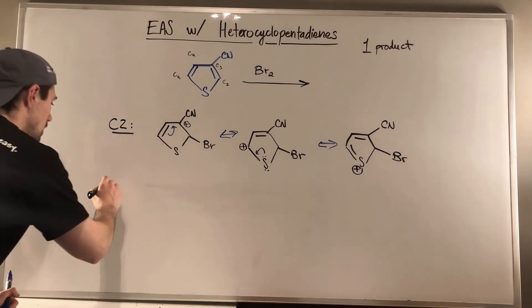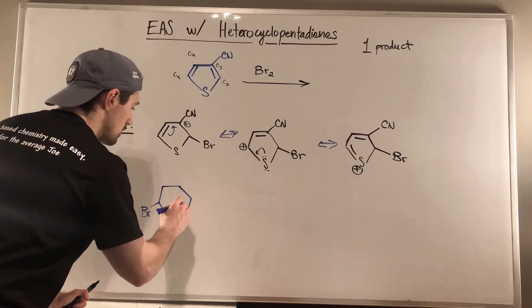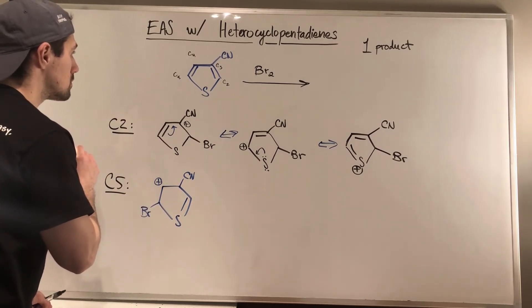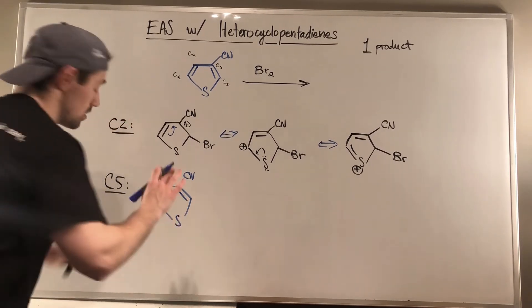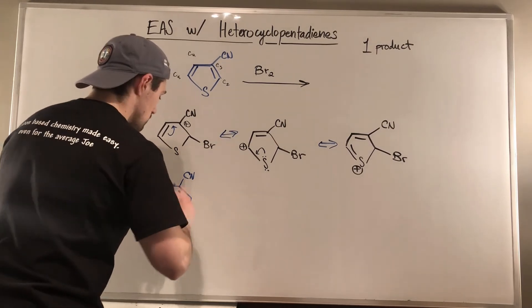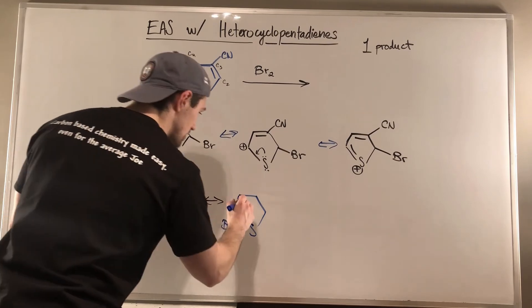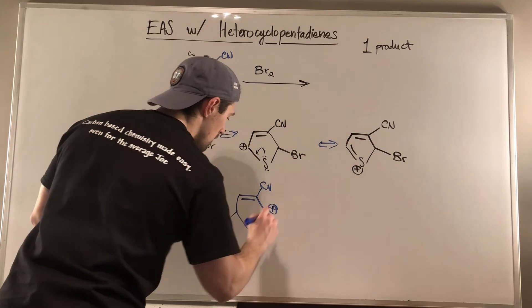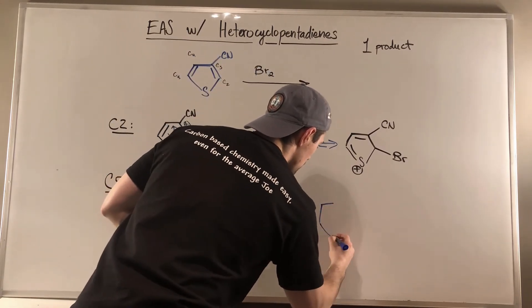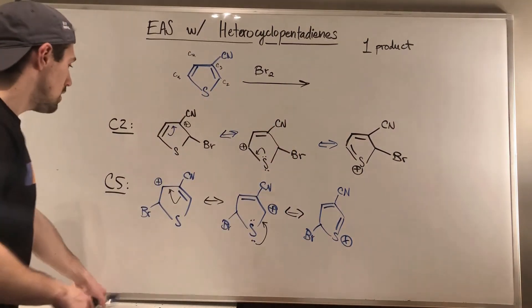Let's draw C5 addition and then compare. If we do our addition to C5, we got bromine over here, a double bond here, the nitrile right here, and a positive charge at C4. Then we can swing this over — sulfur, bromine hasn't been touched, double bond here, nitrile right there, and the positive charge moves to C2. Once again we can use sulfur to swing down an electron lone pair to make a double bond — drawing this one more time: nitrile, double bond, double bond, positive charge, and bromine. So we each have three resonance structures — it's not a difference in how much resonance is available. Let's look at the quality of the resonance.